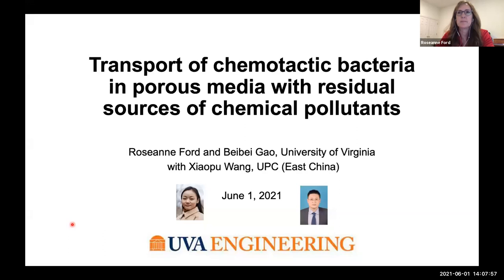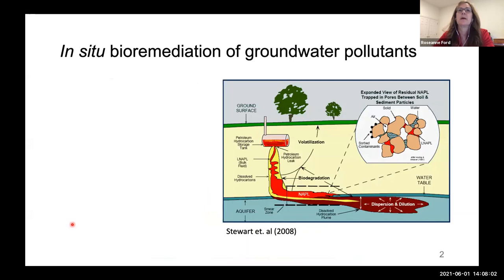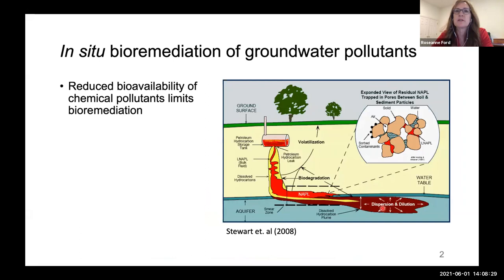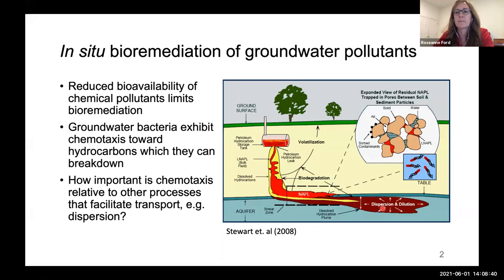One motivation for our work is environmental cleanup of chemically polluted groundwater using in-situ bioremediation. Consider this scenario: petroleum hydrocarbons leak from an underground storage tank into the aquifer below, where dispersion and dilution create a contaminant plume that's difficult to remediate. Low solubility in the aqueous phase and entrapment in the soil matrix, especially in zones with low permeability, present challenges for pump-and-treat scenarios and limit bioavailability for biodegradation to occur. We'll examine chemotaxis — a transport process that draws swimming bacteria to hard-to-reach pollutants not readily accessible to groundwater flow.